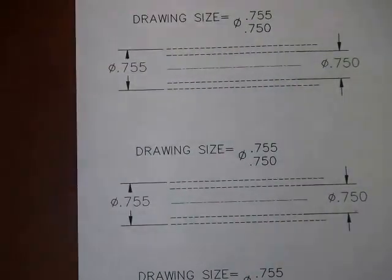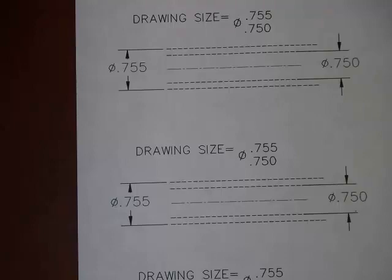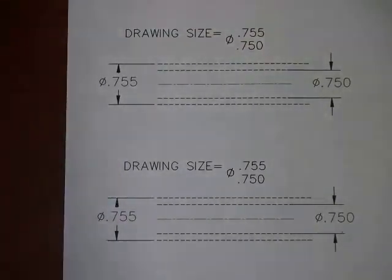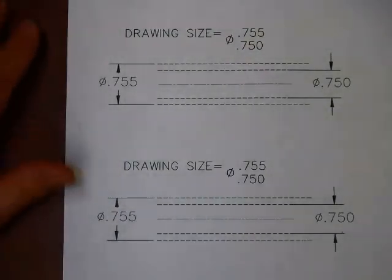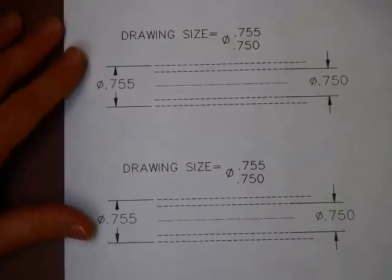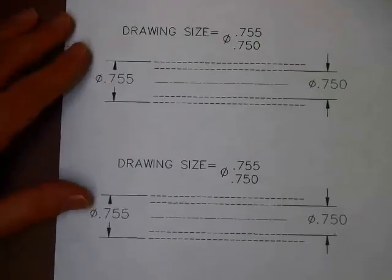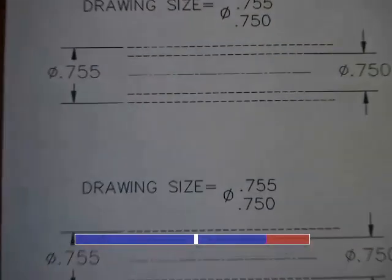Today we're going to talk about geometric dimensioning and tolerancing. We're going to take it slow and start with just one specific one. I want to talk about what we've said so far about tolerancing. So I have a cylinder I want to create, and I'm given an upper and lower tolerance as shown here. I want to create appropriate shapes that are acceptable based on this tolerance.